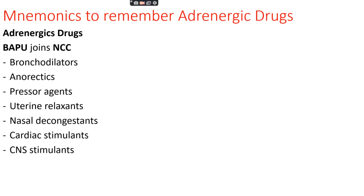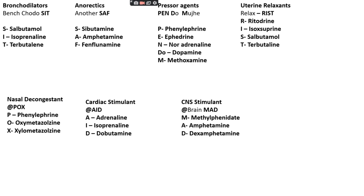To remember adrenergic drugs, we use the mnemonic 'BAPU JOINT MCC': B for Bronchodilators, A for Anorectics, P for Pressure agents, U for Uterine relaxants, N for Nasal decongestants, C for Cardiac stimulants, C for CNS stimulants. For bronchodilators specifically, we remember 'Ben Chhodo Sit': S for Salbutamol, I for Isoprenaline, T for Terbutaline.